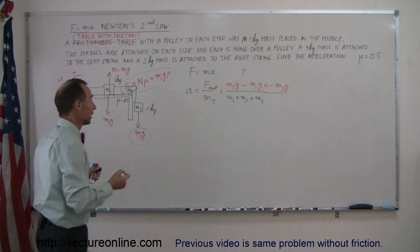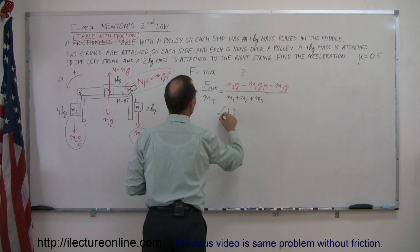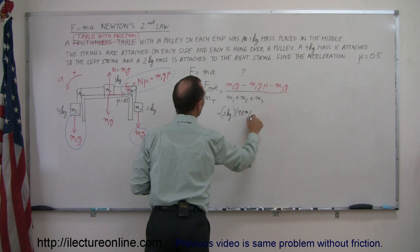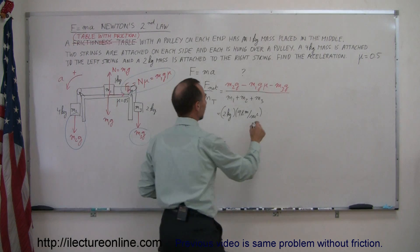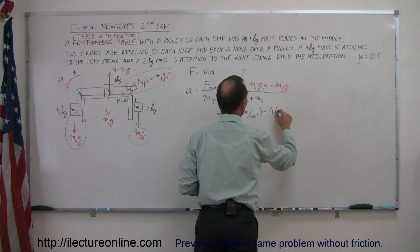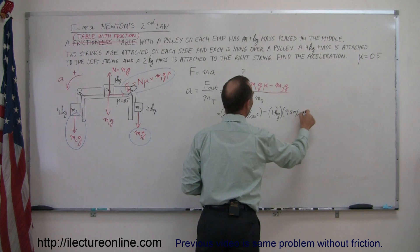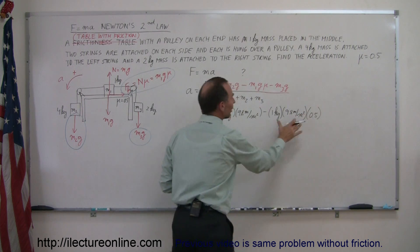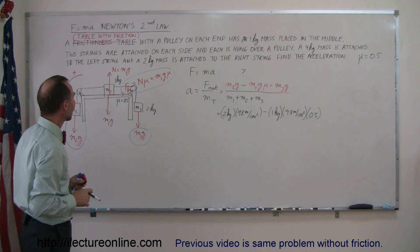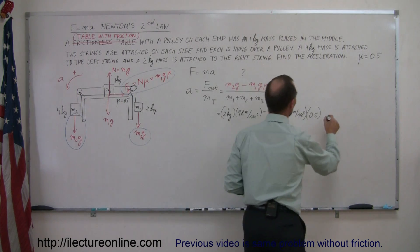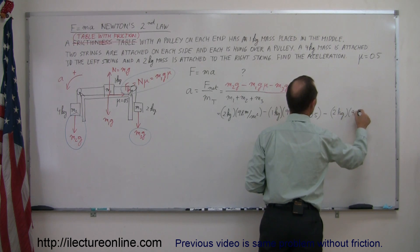Now we're going to plug in the numbers. M2 is equal to two kilograms times 9.8 meters per second squared, minus M1 which is one kilogram times g, 9.8 meters per second squared, times the coefficient of friction 0.5. There's the friction force retarding acceleration. Then we have the third force, also minus because it opposes acceleration, M3 which is two kilograms times g, 9.8 meters per second squared.